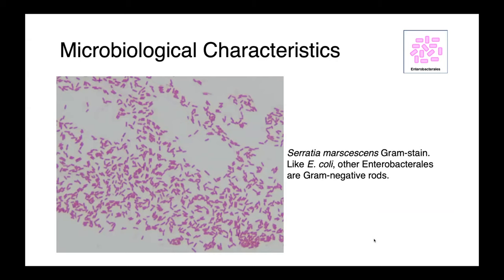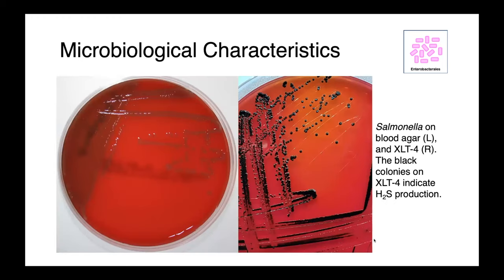Just like E. coli, these bacteria are all gram-negative rods. In this picture here, you can see a pure culture of Serratia marcescens. We commonly use selective and differential media for targeting specific members of the order Enterobacteriales. On the left, you can see a blood agar plate with salmonella growing on it with generic gray colonies. On the right, we have the selective and differential media XLT4, which highlights organisms producing hydrogen sulfide as black colonies, which is potentially a salmonella.